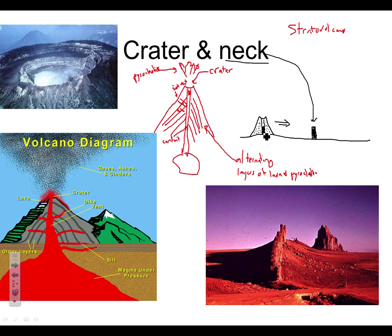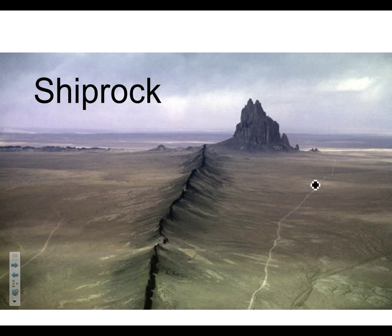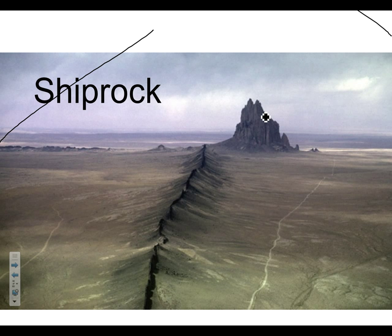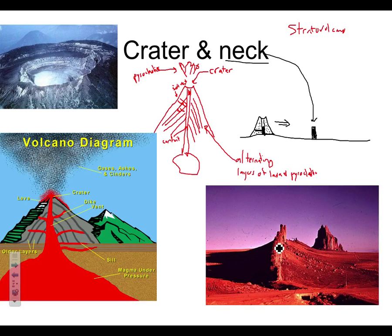Here's a picture of Ship Rock in New Mexico — a famous neck. And going along with it, this is a dike that was also exposed since it was solid rock too. Here's Ship Rock again — you can see how huge it is. The sides of the original volcano would have extended well beyond these dikes, so it would have been an enormous volcano. What's left is the conduit as the neck and the dikes. You can see how the dike is like a sheet of rock — not very thick.